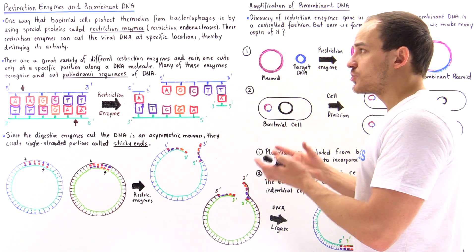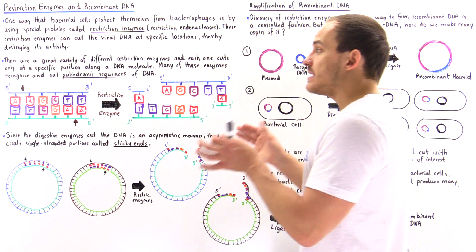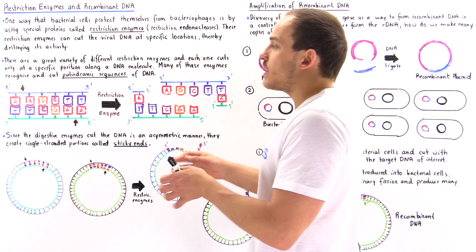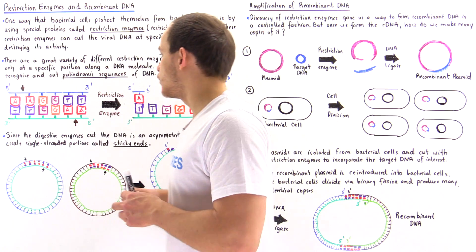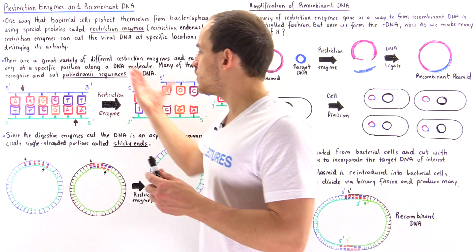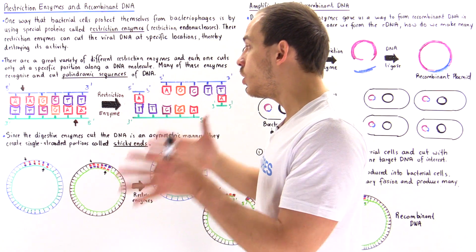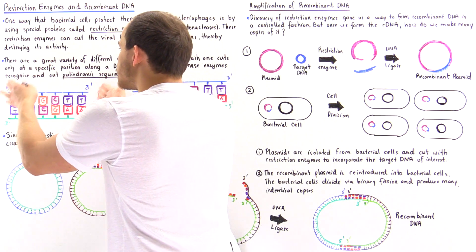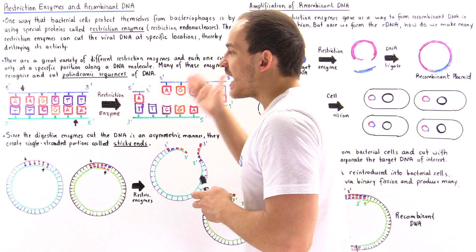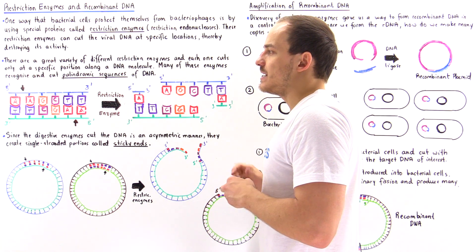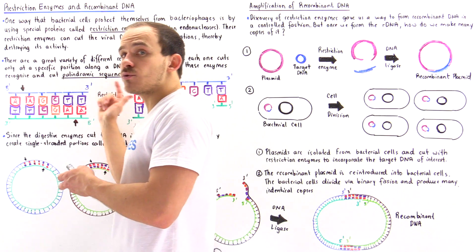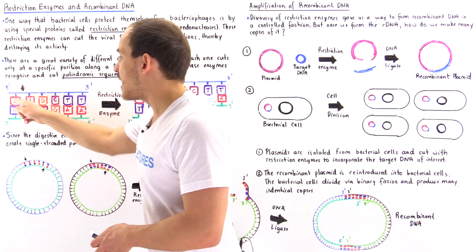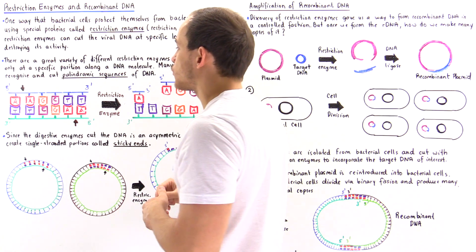Most of these restriction enzymes basically look for these types of palindromic sequences on the DNA, and that's where they cleave those DNA molecules. For this particular example, let's suppose we add a restriction enzyme that looks for this specific palindromic sequence. What the enzyme does is it finds that palindromic sequence and cuts at a specific location — let's say, between the adenine bases along this specific palindromic sequence.